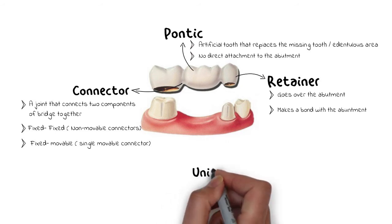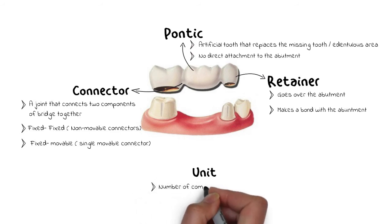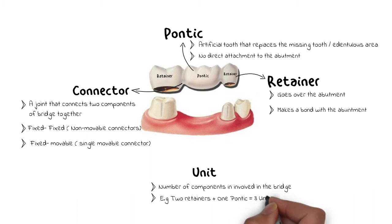Finally, we have the term unit. A unit is a term that can be used for either a retainer or a pontic. It is basically a collective term for any bridge that tells us the number of units involved in that bridge. In this example, we have two retainers and one pontic — therefore this will be a three-unit bridge. Similarly, there are also four-unit bridges and five-unit bridges, depending upon the number of retainers and pontics involved in the making of the bridge.